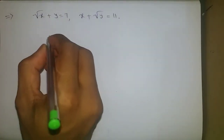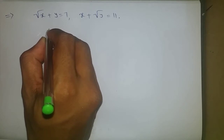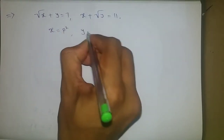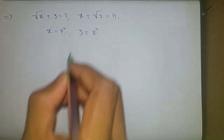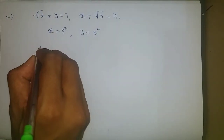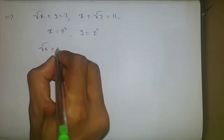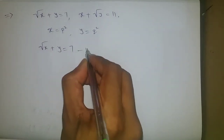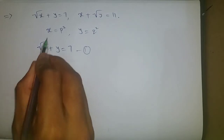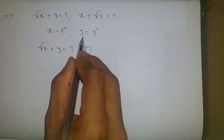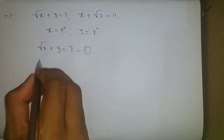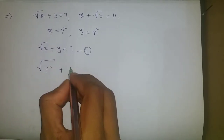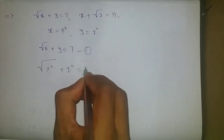To simplify, I am taking x = p² and y = q². So the first equation, root(x) + y = 7, becomes: in place of x we put p², and in place of y we put q². So we have root(p²) + q² = 7.